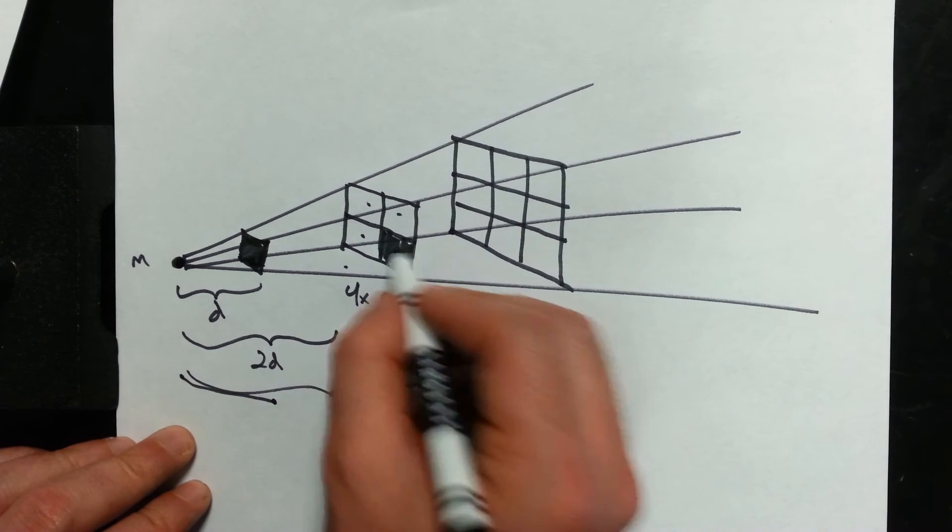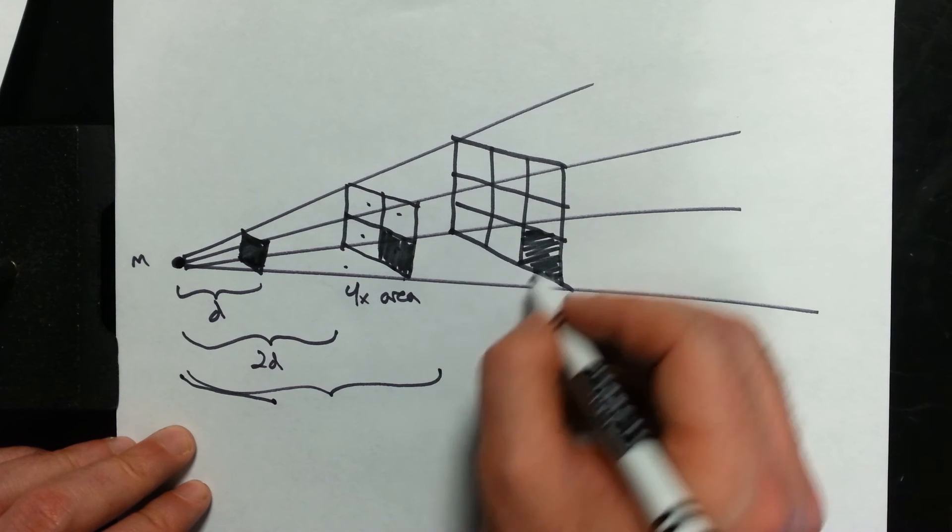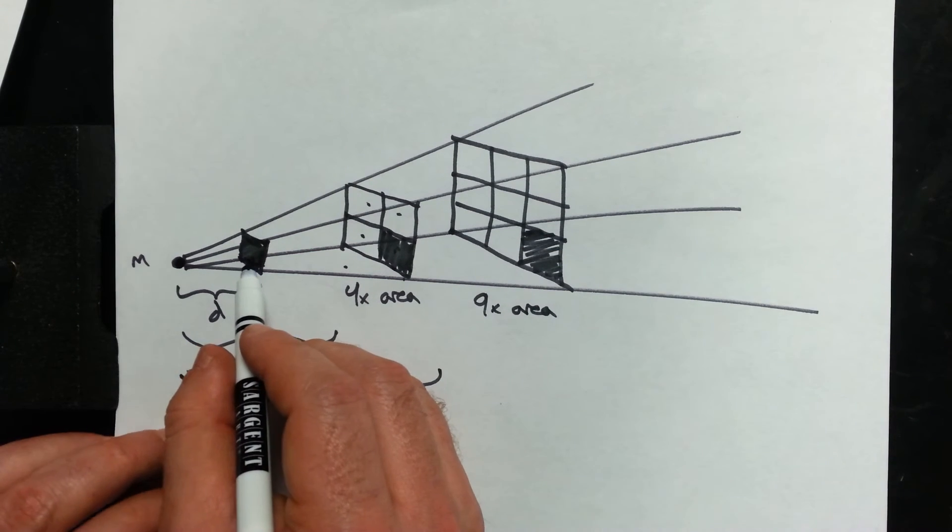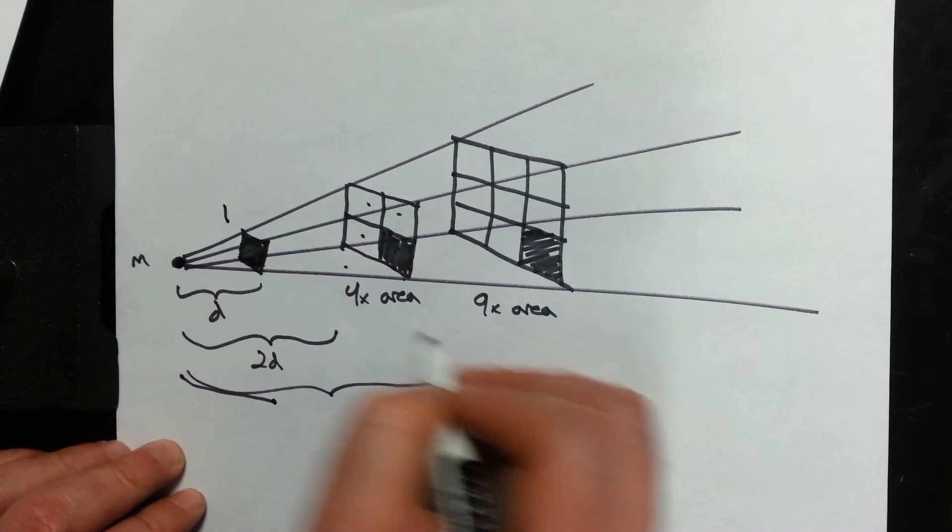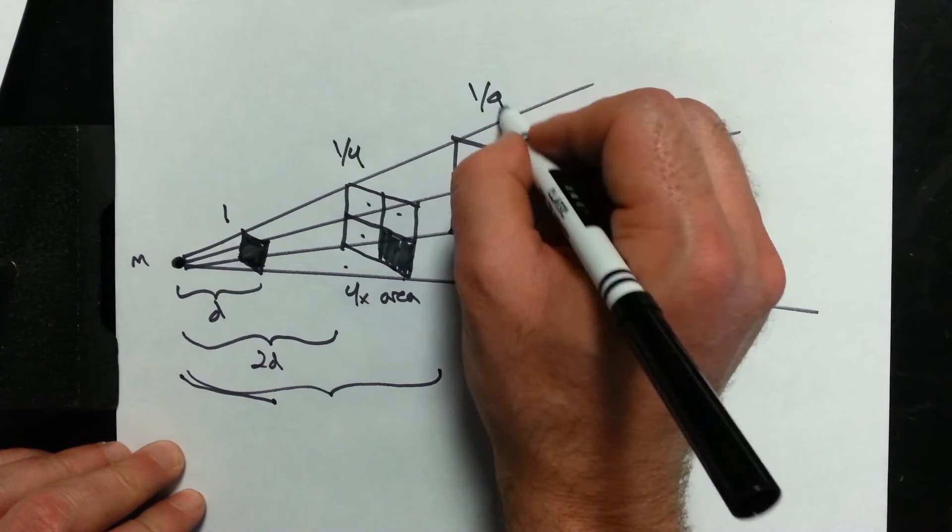And now this same square, which is still this same size, is only, I have to cover nine times as much area. So really the same amount of gravitational force, gravitational strength has to spread out against full area or one fourth of the area or one ninth of the area.